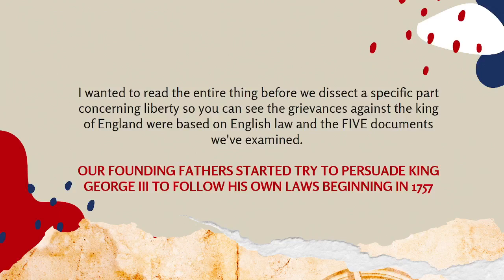The Declaration of Independence has an initial statement, but they also listed several specific grievances against the King of England based on English law — and the five documents we've examined previously, which you can find on my feed. They had started trying to persuade King George III to follow his own laws beginning in 1757, so it was actually more than a decade. Benjamin Franklin spent a huge amount of time in England trying to persuade things.